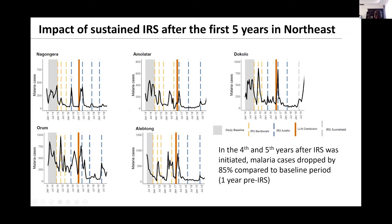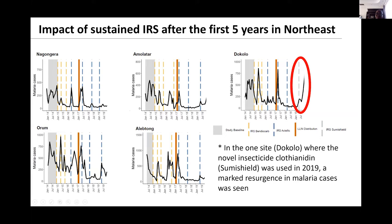Prior to IRS, malaria burden in all districts was high. With subsequent IRS, we saw significant reductions in the burden of malaria. By the fourth and fifth year, we had over 85% reduction in malaria burden compared to the baseline pre-IRS estimates. I'm now going to concentrate on just one district where there was a change from Actellic to SumiShield. SumiShield is a clothianidine-based IRS formulation.